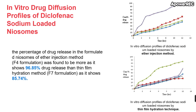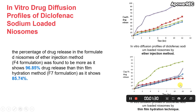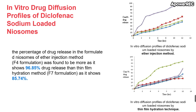In the in vitro drug diffusion study, all eight formulations were evaluated using the Franz diffusion cell. For formulations prepared by ether injection, F4 showed the highest drug release profile at 96.85% over 12 hours. For those prepared by thin film hydration, F7 showed the highest drug release at 85.74%. Overall, the percentage drug release from the ether injection method formulation F4 was higher than that of thin film hydration method formulation F7 over the 12-hour period.